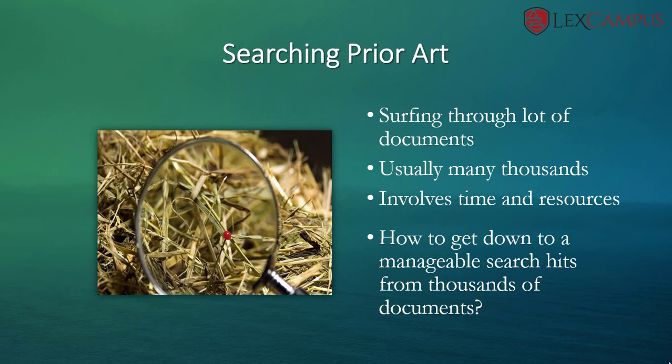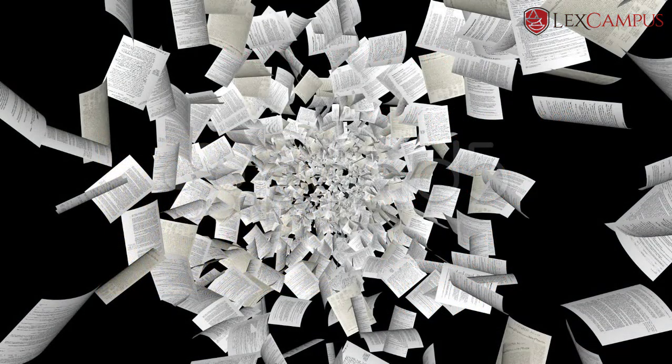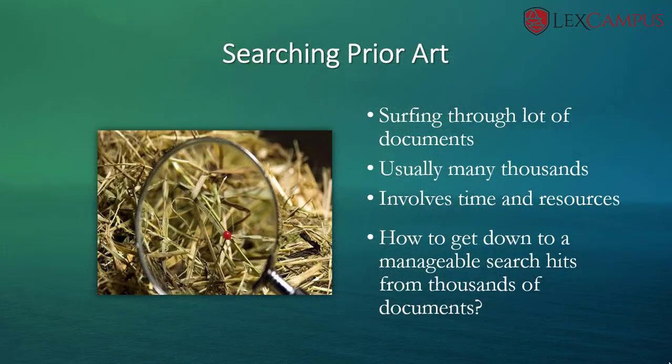Here I am going to take you through the process of searching prior art. Searching prior art involves surfing through a lot of documents. Usually it involves thousands of documents to search through before you find a meaningful hit. It obviously involves time and resources. So a good searcher would put in a good set of keywords and brings down documents to a manageable number of search hits from thousands of documents.